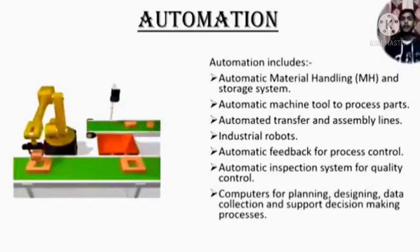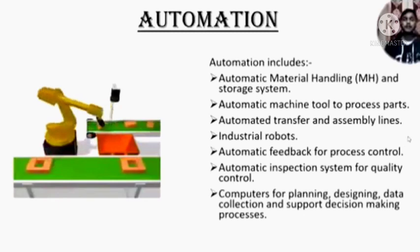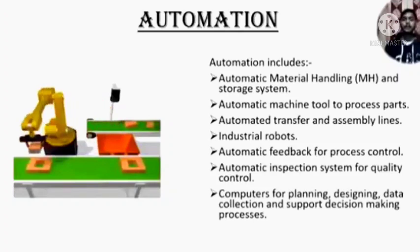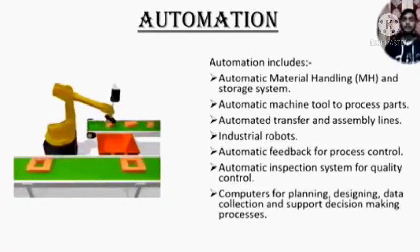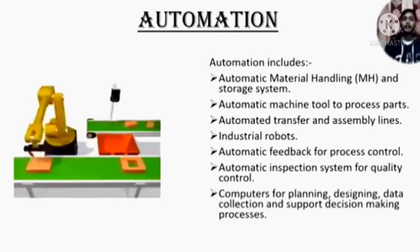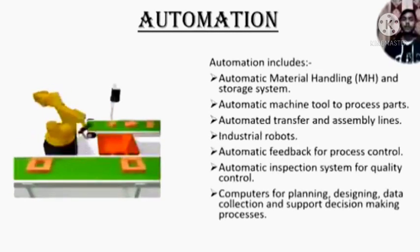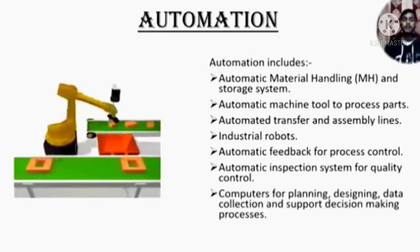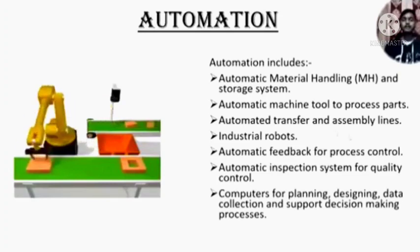Automation includes automatic material handling and storage systems, automatic machine tools to process parts, automated transfer and assembly lines, industrial robots, automatic feedback for process control, automatic inspection systems for quality control, computers for planning, designing, data collection and support in decision-making processes.